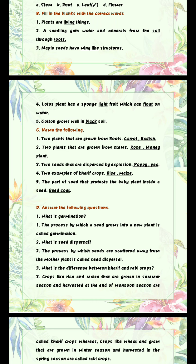Number 4: Two examples of Kharif crops. Answer is rice and maize — R-I-C-E, M-A-I-Z-E. Number 5: The part of the seed that protects the baby plant inside a seed. Answer is seed coat — S-E-E-D C-O-A-T. Summary: 1 — carrot, radish; 2 — rose and money plant; 3 — poppy and pea; 4 — rice and maize; 5 — seed coat.